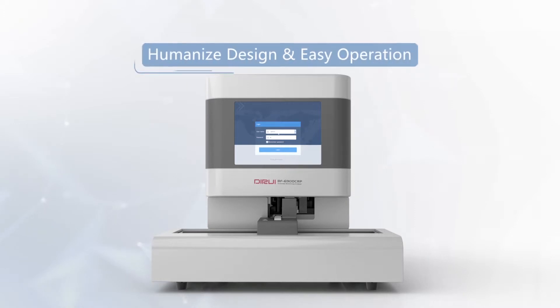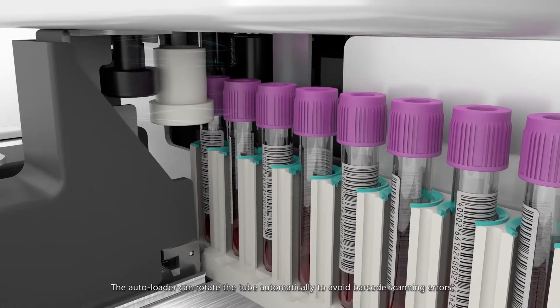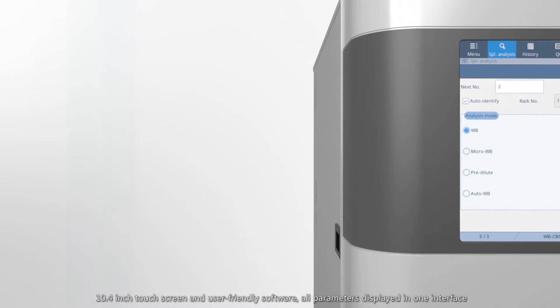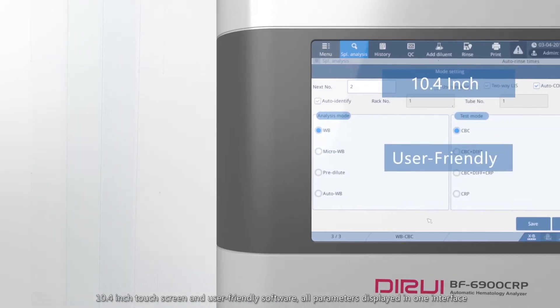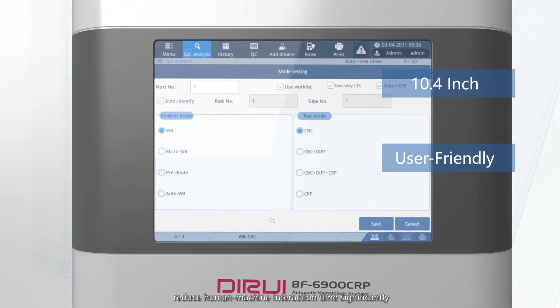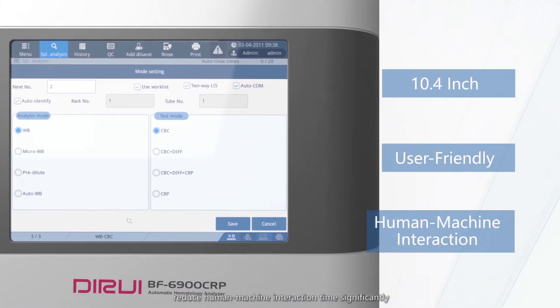Humanized design and easy operation. The autoloader can rotate the tube automatically to avoid barcode scanning errors. 10.4 inch touchscreen and user-friendly software, all parameters displayed in one interface. Reduce human-machine interaction time significantly.